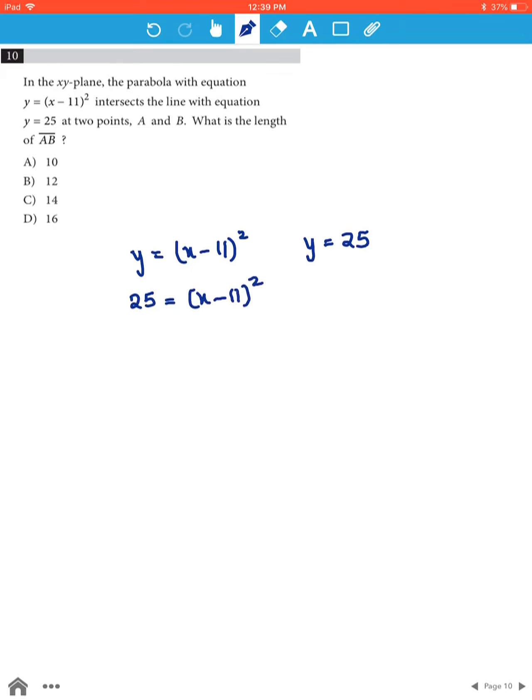Therefore, by taking square root on both sides, we will get x-11 = ±5. Therefore, x-11 = 5 or x-11 = -5. Therefore, x = 16 or x = 6.